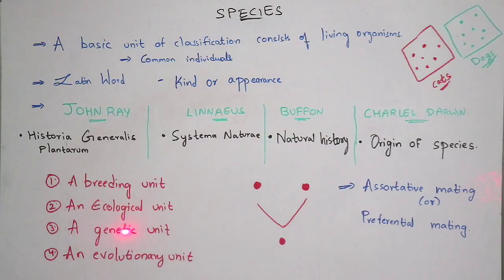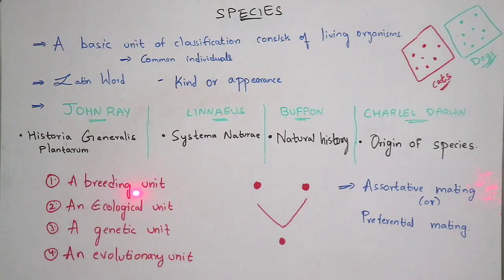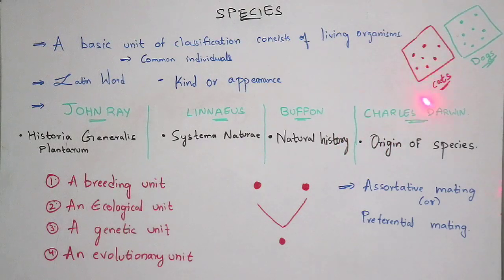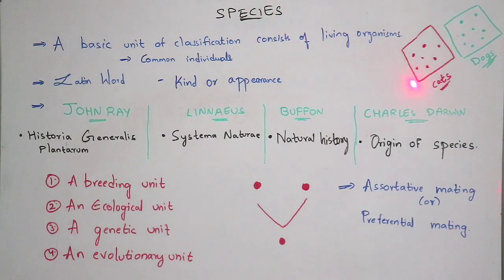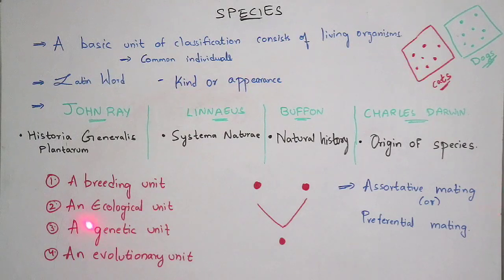For example, if you take cows, where do cows live? They live in grassland areas where there is availability of grass — that is, they share the same ecological environment. Similarly, if you take cows as the species, all individuals in that group belong to the same species called cows, and they all live in grassland areas, sharing the same ecological unit.